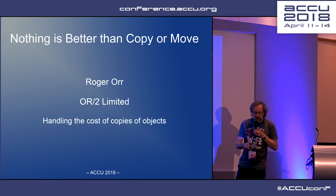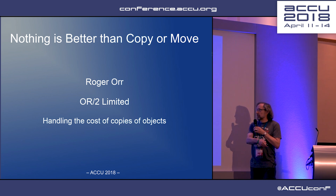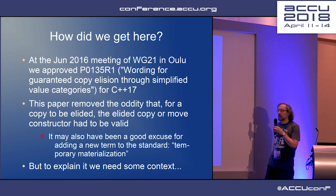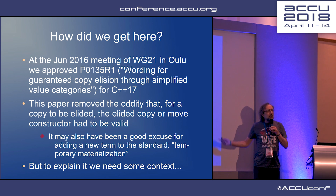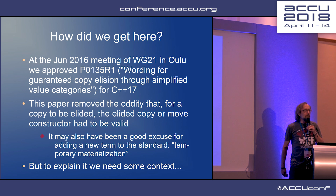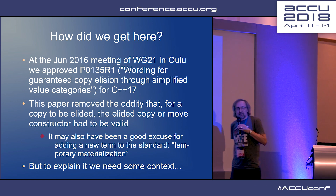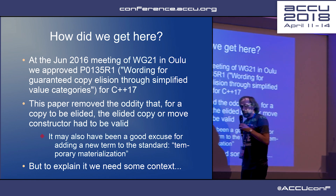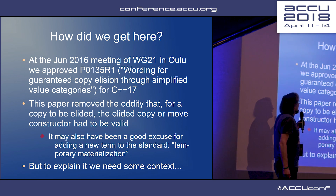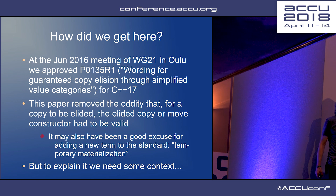Some of you look nearly as old as me, and you may remember way back. Let's start with a more recent meeting. Richard Smith, who authored this paper, is here this week and I did try to persuade him not to be in the room. At the June 2016 meeting in Oulu, we approved a paper called 'Wording for Guaranteed Copy Elision Through Simplified Value Categories', which is obviously completely trivial.